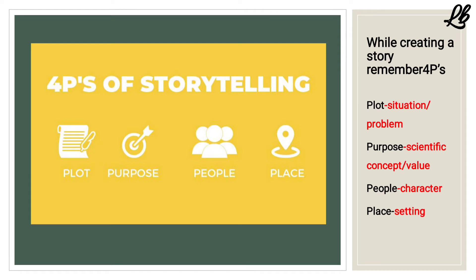There are four P's of storytelling. The first one is Plot — that's a situation, problem, or dilemma. Let's take an example: spread of dengue during monsoon season. The second P is Purpose — the scientific concept or value. Here, the purpose is to make students aware about the symptoms of dengue and ways to prevent them from the deadly disease.